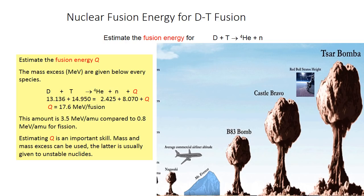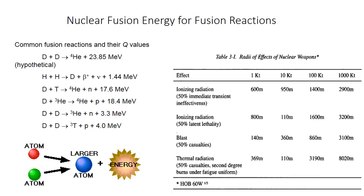Fusion releases 23.5 MeV/AMU compared to 0.8 MeV/AMU for fission. Estimating Q is an important skill; mass and mass excess can be used, the latter usually given for unstable nuclides. Common fusion reactions and their Q values: D+D → ⁴He (23.85 MeV); D+T → ⁴He+N (17.6 MeV); D+³He → ⁴He+p (18.4 MeV); D+D → ³He+N (3.3 MeV); D+D → T+p (4.0 MeV).